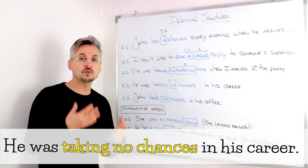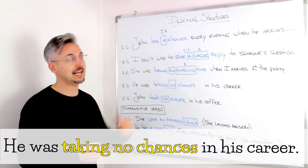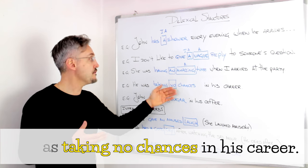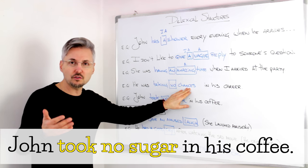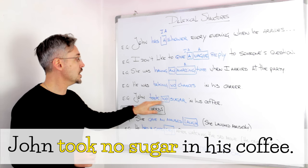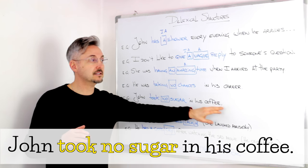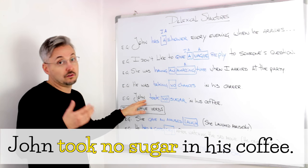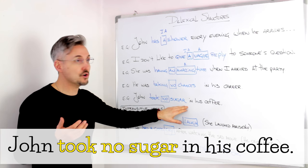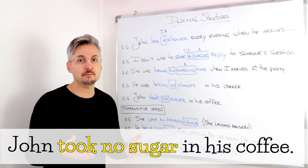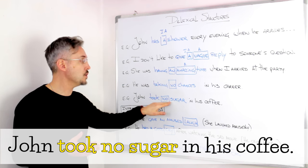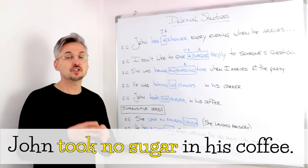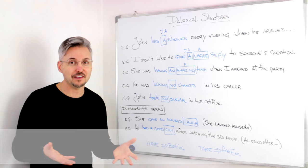This is another way to have the lexical structure with the word no before the noun. Now, I'm going to give you another example. John took no sugar in his coffee. I could have said, John didn't take sugar in his coffee. It's the same thing. But I chose to say, no sugar in his coffee. Just to stress the fact that he didn't take any sugar in his coffee.